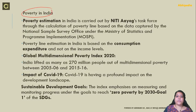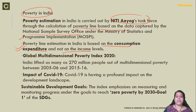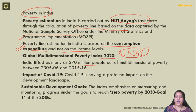Regarding poverty in India: India calculates the poverty line based on data provided by the National Sample Survey Office (NSSO) under the Ministry of Statistics and Programme Implementation. The poverty line is based on consumption expenditure, not income levels. As per the Global Multidimensional Poverty Index 2020 by UNDP, India lifted as many as 270 million people out of multidimensional poverty between 2005–06 and 2015–16. We must focus on SDG Goal 1, which targets zero poverty by 2030.